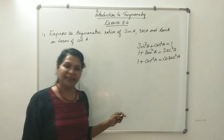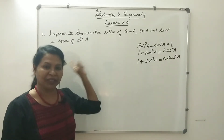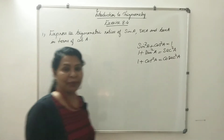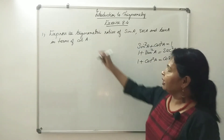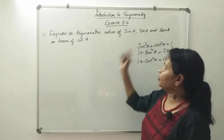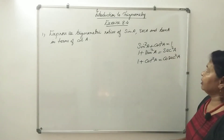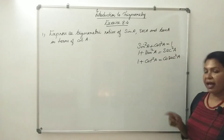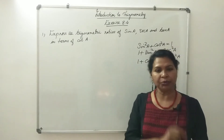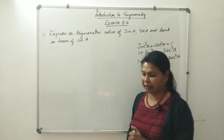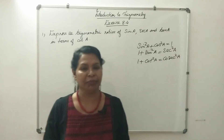How did you get the identity? The question is: express the trigonometric ratios of sin, sec, and tan in terms of cot. I have done this one before, but not that one. This one is simple.